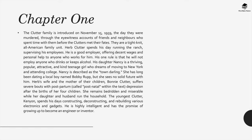Chapter 1: The Clutter family is introduced on November 15, 1959 — the day they were murdered — through eyewitness accounts of friends and neighbors who spent time with them before the Clutters met their fates. They are a tight-knit, all-American family unit. Herb Clutter spends his day running the ranch and supervising his employees. He is a good employer, offering decent wages and personal help to anyone who works for him, with one rule: he will not employ anyone who drinks or keeps alcohol. His daughter Nancy is a thriving, popular, attractive, and kind teenage girl who dreams of moving to New York and attending college — described as the town darling.